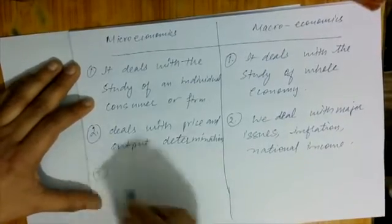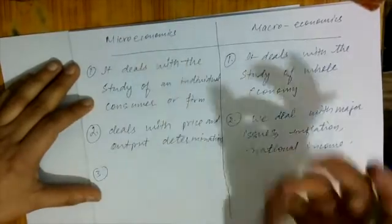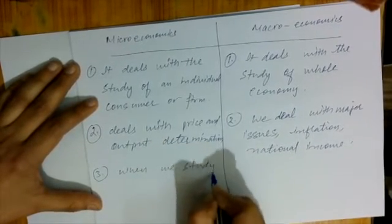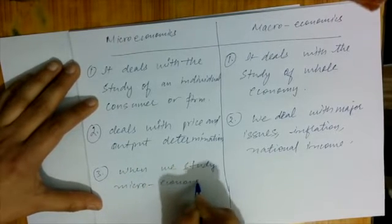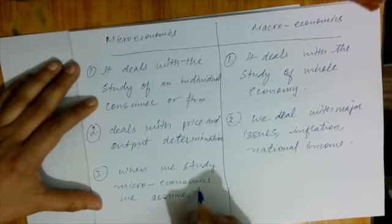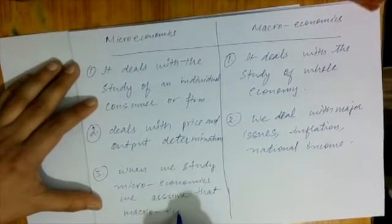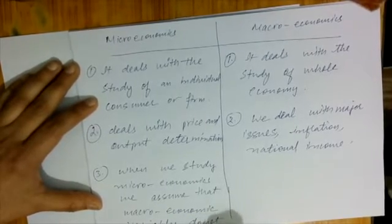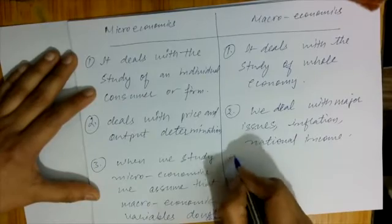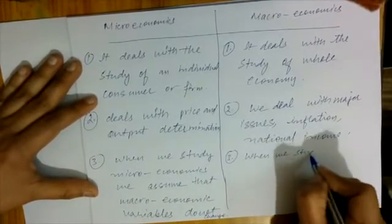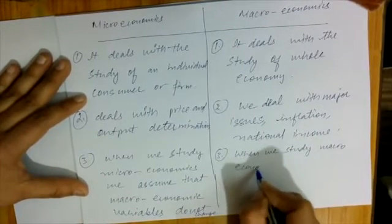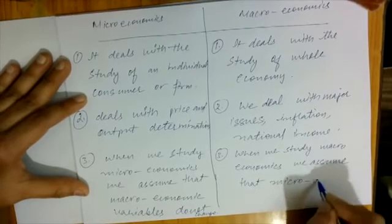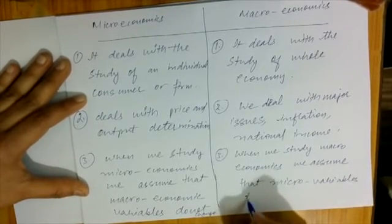The third main difference: when we study Microeconomics, we assume that macroeconomic variables do not change. And when we study Macroeconomics, we assume that micro variables do not change.